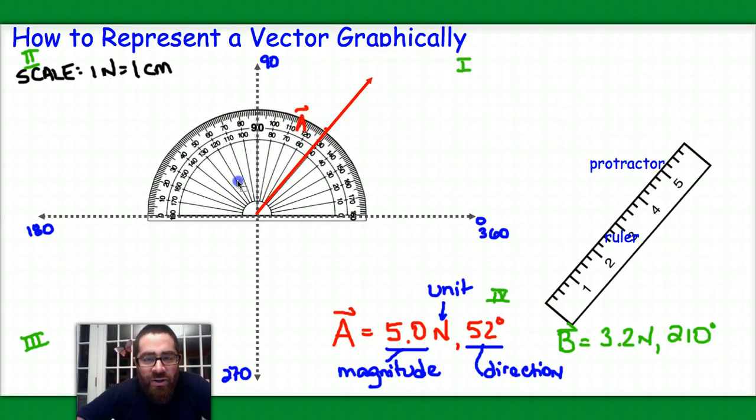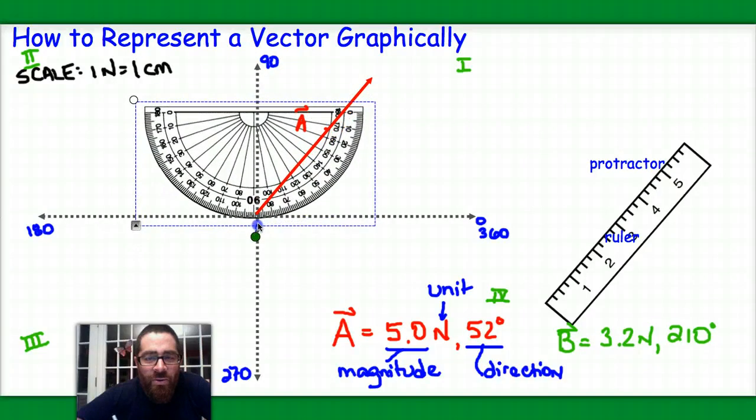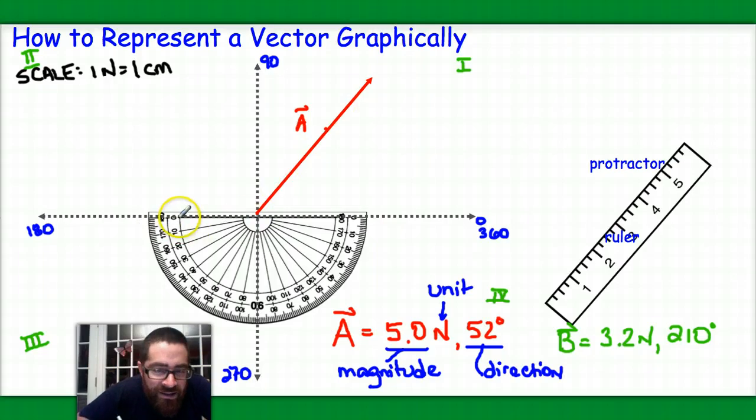Once again, when I set up my protractor here, I should recognize that 0 is the positive X, 90 is the positive Y, 180 is the negative X. And I'm beyond 180, which means I'm going to basically have to turn my protractor around in order to use it properly for this problem. So basically, 210 degrees is 30 degrees beyond 180. So when I make my guide mark here, I can see this is 0, 10, 20, and 30. And I'm going to place my guide mark right there.